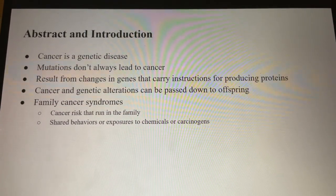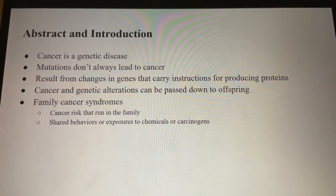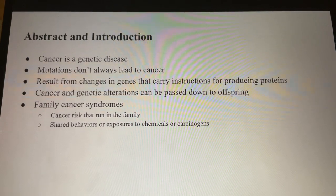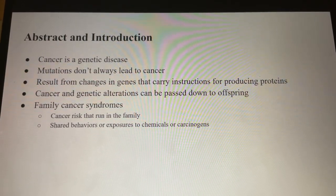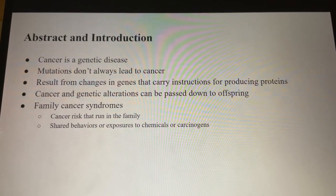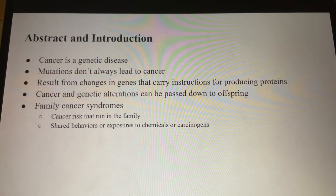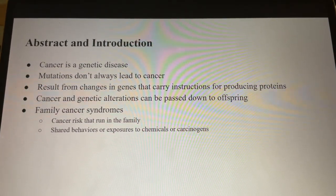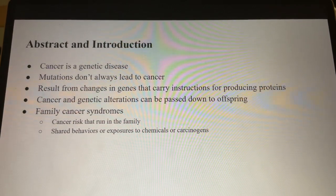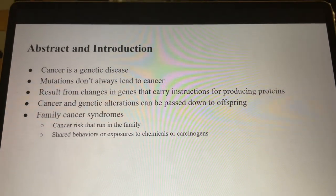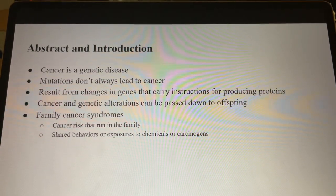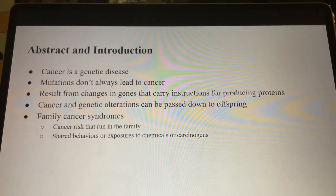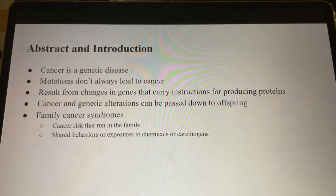Notably, cancerous and genetic alterations cannot be passed down to the offspring. Rather, the genetic modification that enhances cancer susceptibility can be inherited if it exists within a parent's egg or sperm cells. For instance, if a parent transmits a mutated BRCA1 or BRCA2 gene to their offspring, the child's likelihood of developing breast cancer and several other types of cancer that link with this gene significantly rises. This is why sometimes cancer seems to cluster and have a higher chance of occurrence in families. It is estimated that as much as 10% of all cancers stem from genetic changes that are inherited.